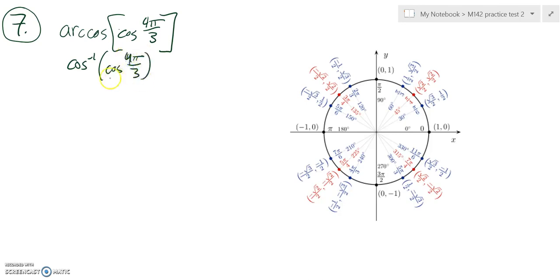So first off, let's figure out what cosine of 4 pi over 3 is. 4 pi over 3 is here. Cosine is width, that x value, so it's negative 1 half.